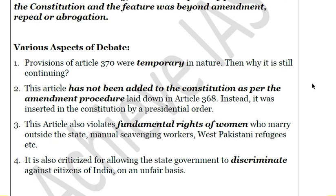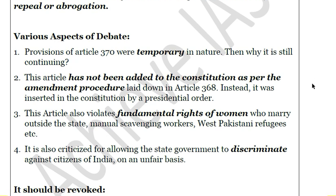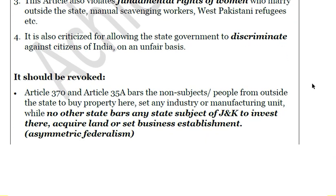It is also alleged that these articles lead to violation of fundamental rights of women of the state. Women who marry outside J&K are deprived of the property rights they were earlier entitled to — it is a clear disincentive, and women are denied their share of property in the state. Other sections of society also cannot enjoy their fundamental rights, whether they are manual scavengers or West Pakistani refugees. It is also criticized that the state government uses these provisions to discriminate against Indian citizens on an unfair basis.